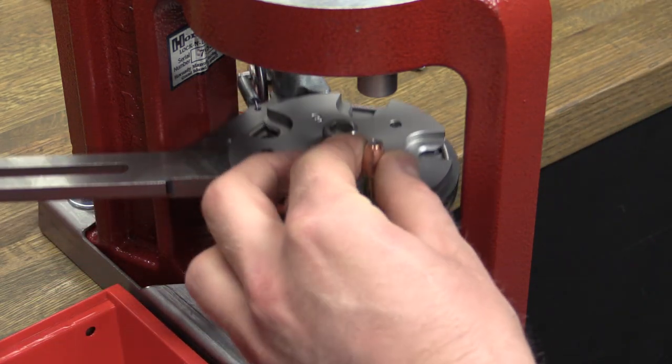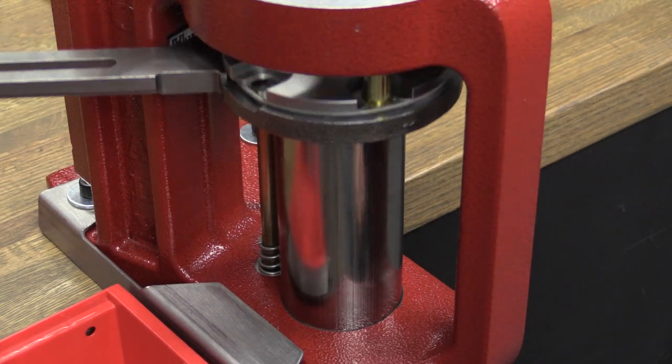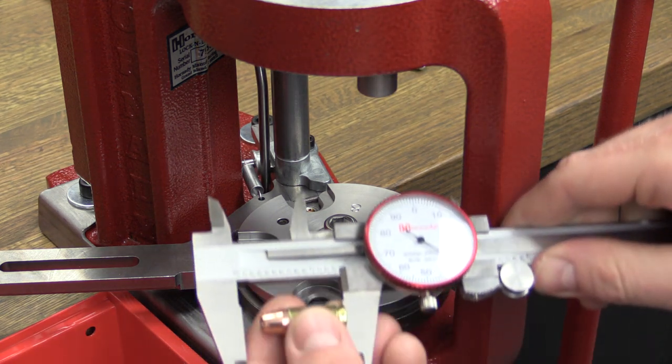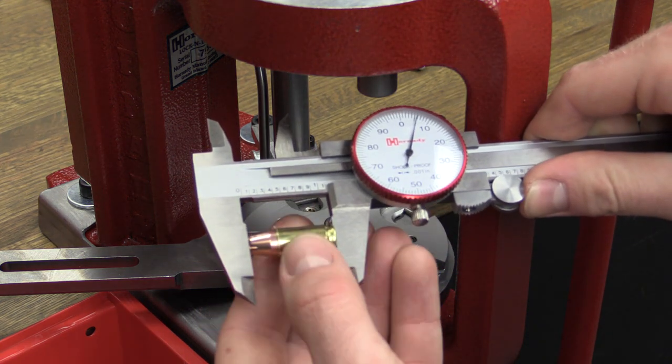Place a bullet on top of the case and lower the handle to seat the bullet. Use calipers to verify that the bullet is seated to the proper depth. With all adjustments made, you are now ready to begin your reloading process.